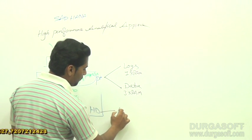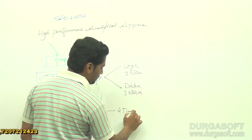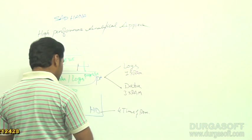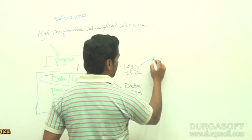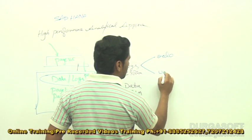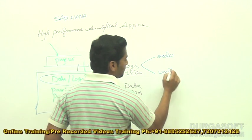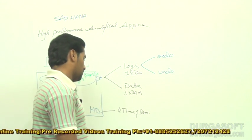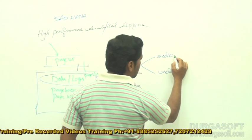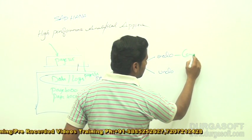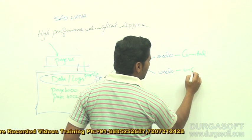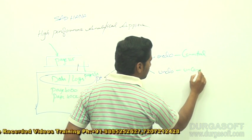And the hard disk is always 4 times the RAM. Now, there are 2 types of logs: redo logs and undo logs. The redo logs will store the committed records, and the undo logs will store the uncommitted records.